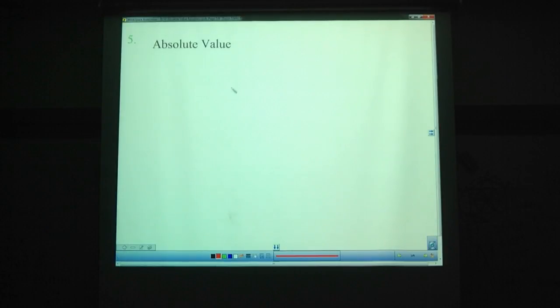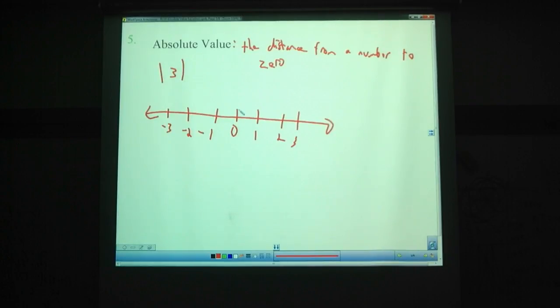Today's objective. We can solve absolute value equations. It's going to be so much fun. Absolute value is defined as the distance from a number to zero. So, for instance, if we have a number line, if we have absolute value of three, that is three spaces away from zero, so it's equal to three.